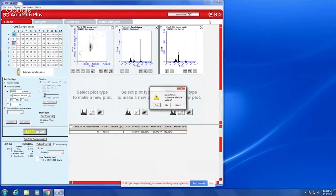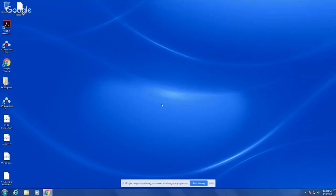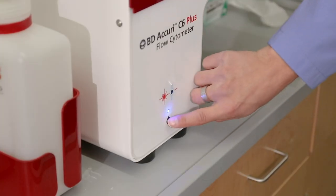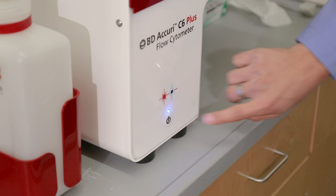After that is finished, close the software and log out of Windows. Press the power button on the front of the cytometer once to initiate shutdown. This requires the water tube to be on the machine with at least two milliliters of water.